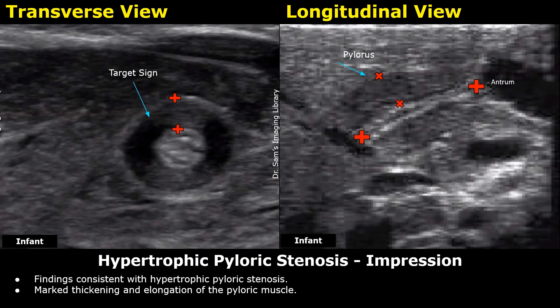Now we can write the impression, which includes the main finding and diagnosis: findings consistent with hypertrophic pyloric stenosis, with marked thickening and elongation of the pyloric muscle. This is an example of an ultrasound report regarding hypertrophic pyloric stenosis.